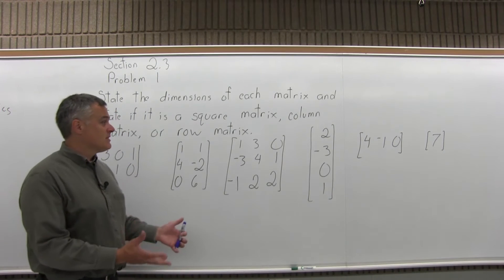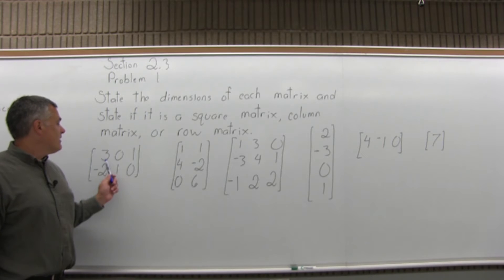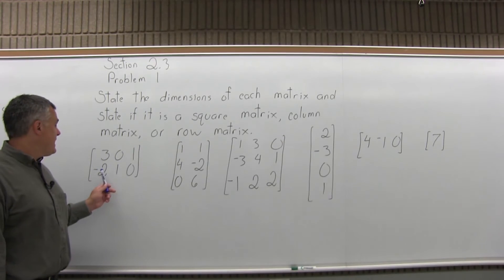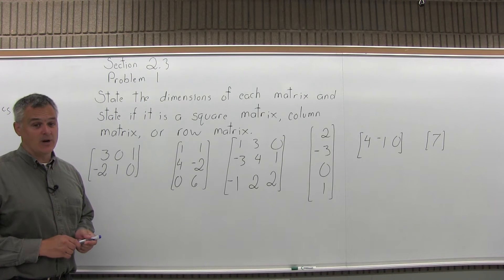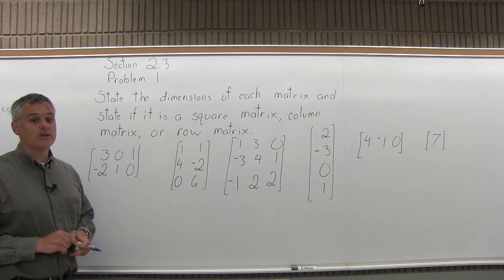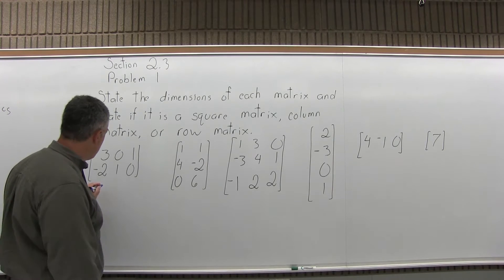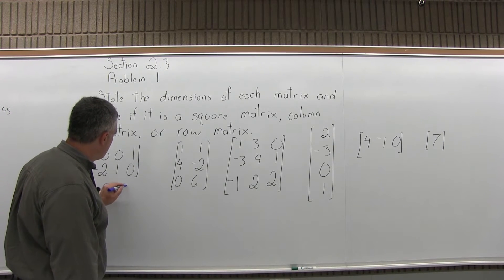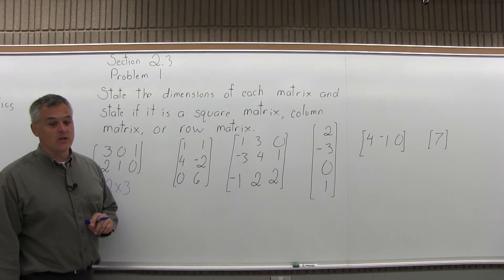This is problem number 1 from Section 2.3. It says: state the dimensions of each matrix and state if it's a square matrix, a column matrix, or a row matrix. The first matrix has 3, 0, 1 in the top row and negative 2, 1, 0 in the second row. This is a 2 by 3 matrix — you state the number of rows first, then the number of columns. It has 2 rows and 3 columns.